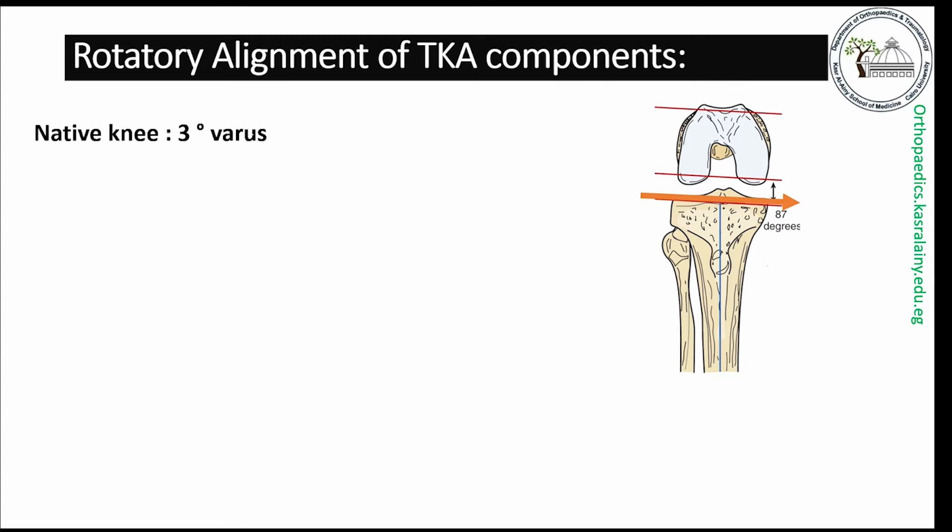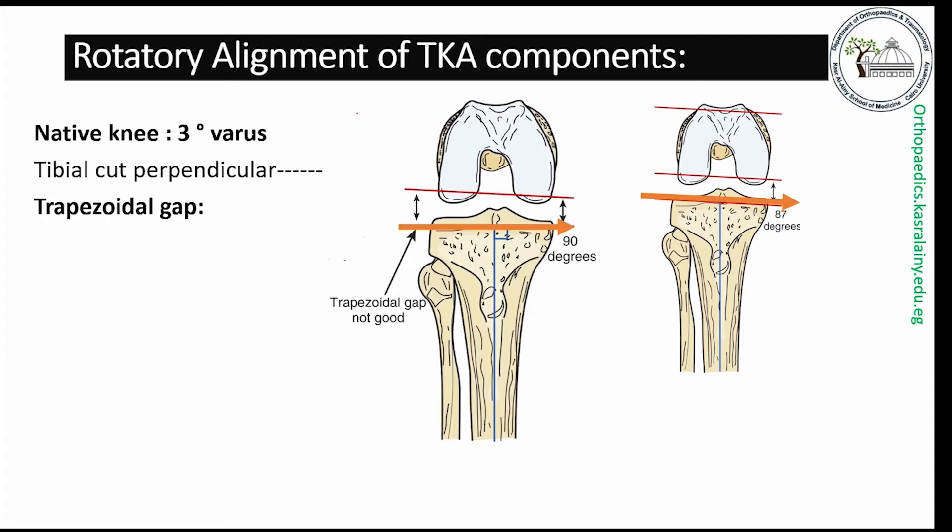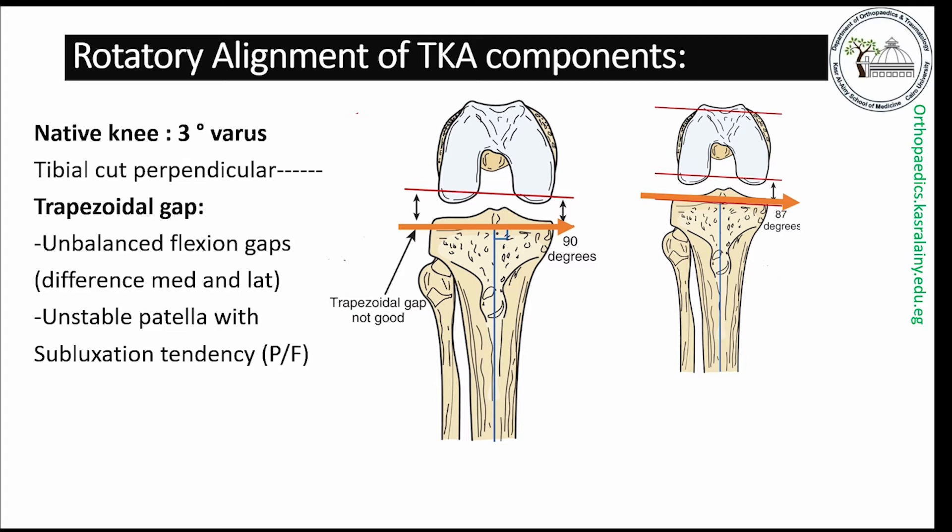Another alignment consideration for TKA components is the rotatory alignment. The native knee has 3 degrees of varus. The tibial cut made perpendicular to the anatomical axis leads to a difference between the medial and lateral sides of the joint, referred to as the trapezoidal gap. This gap is not acceptable as it leads to an unbalanced flexion gap and an unstable patella with subluxation tendency of the patellofemoral joint.